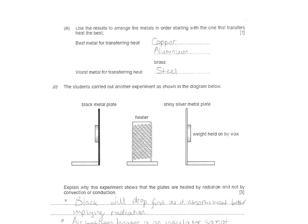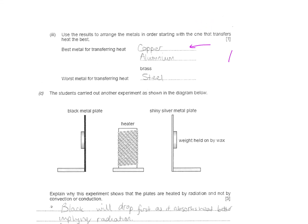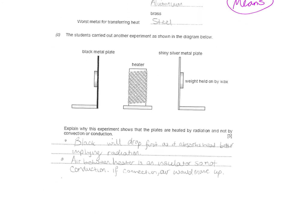Use the results to arrange the metals. You're looking for the one which has the lowest mean. If you go back to your table results, copper had the lowest mean, so that would be the best at transferring heat, and you could work your way down based on the means. Look at the means - a nice question, just extracting information from the table.